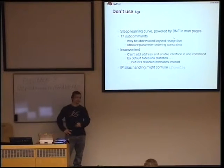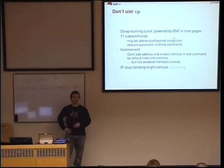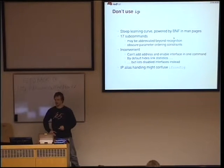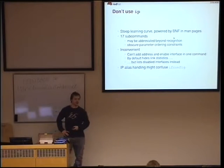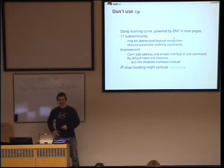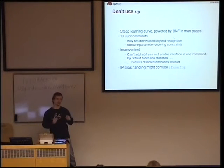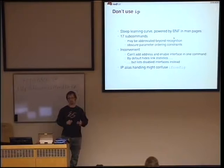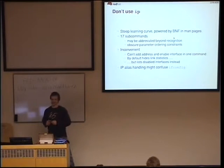In addition, it has a whole lot of 17 subcommands, so the IP man page is pretty overwhelming. You can abbreviate them to reduce typing, which means your friend who reads your history has no idea what you were doing. And sometimes you have to take care of how you order the different parameters. It's not exactly GitHub — not at all. So it's not intuitive.